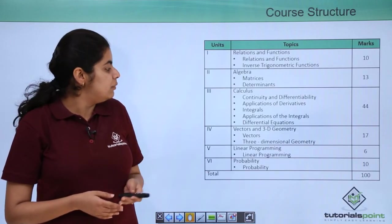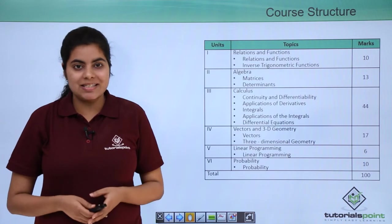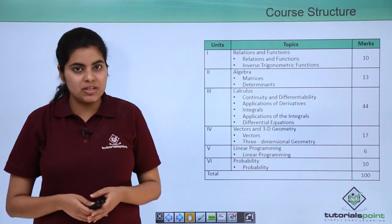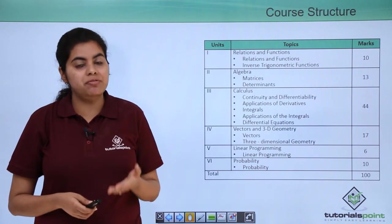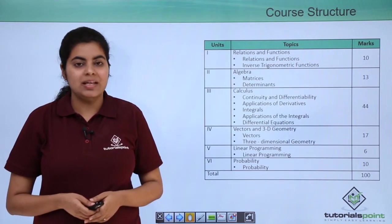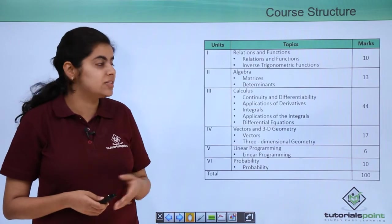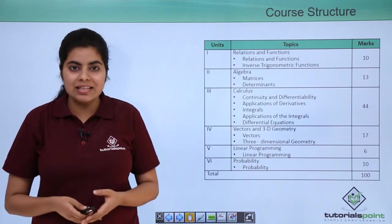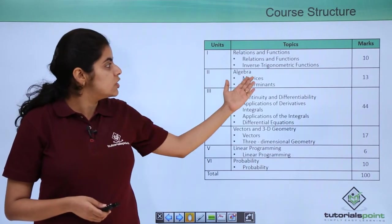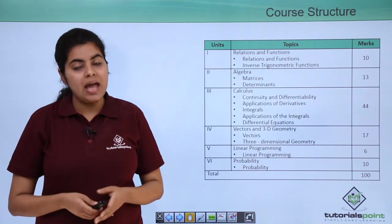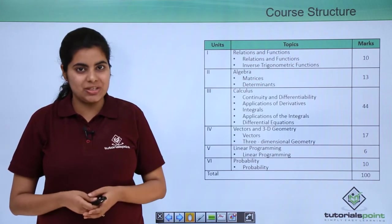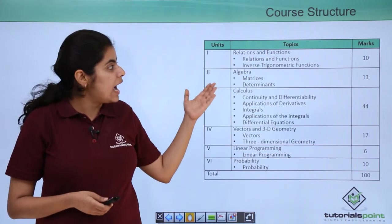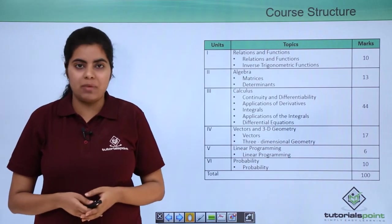We have namely 6 units in our syllabus. The name of the first unit is relations and functions, and it has 2 chapters under it. The first chapter is relations and functions, and the second chapter is inverse trigonometric functions. Both these chapters are covered under the same first unit. This unit has overall weightage of 10 marks.